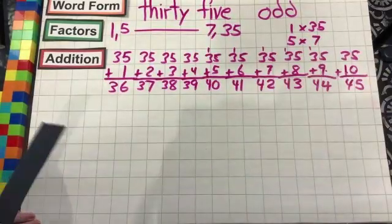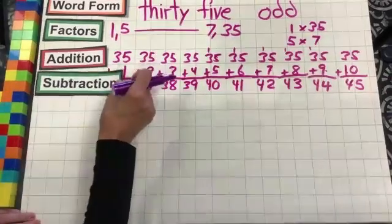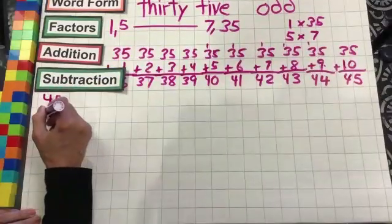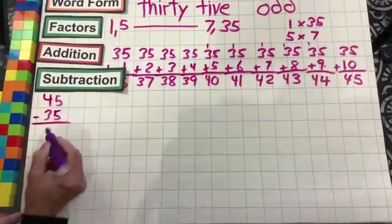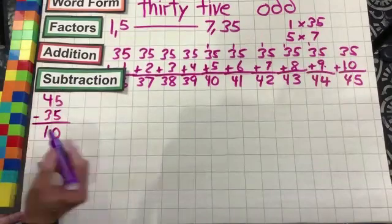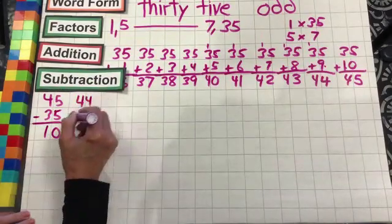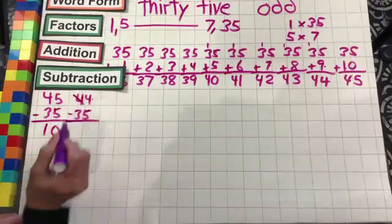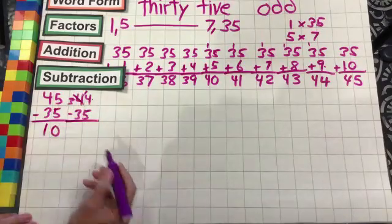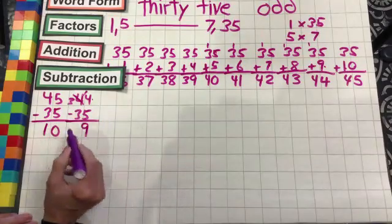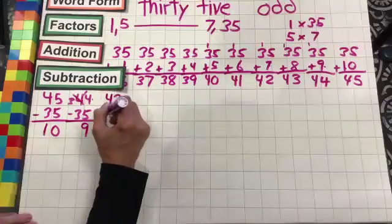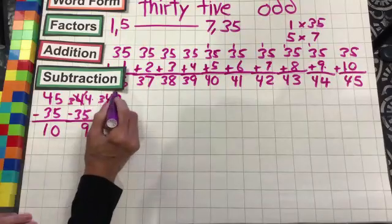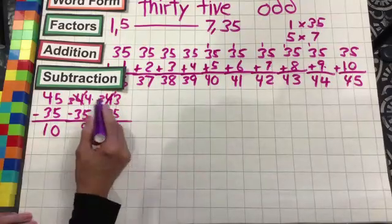Now our subtraction. We're going to start with 45 minus 35: five minus five is zero, four minus three is one. 44 minus 35: five from four cannot do, so we borrow from the four leaving three, making that 14 minus five is nine, three minus three is nothing. 43 minus 35: five from three we cannot do, borrow from the four leaving three, making that 13 minus five is eight, three minus three is nothing.